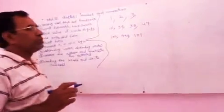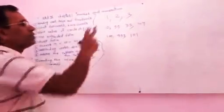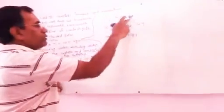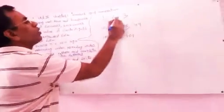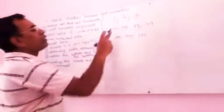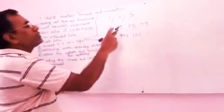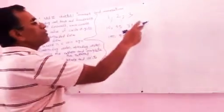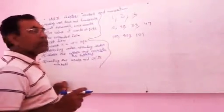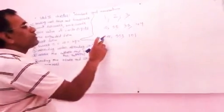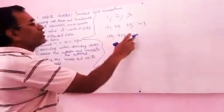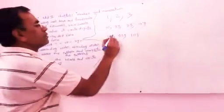Now look: how can you identify 1's? A 1-digit number is in the ones place. How can you identify 10's? It has a ones place and a tens place. How can you identify 100's? It has a ones place, tens place, and hundreds place. Understood?